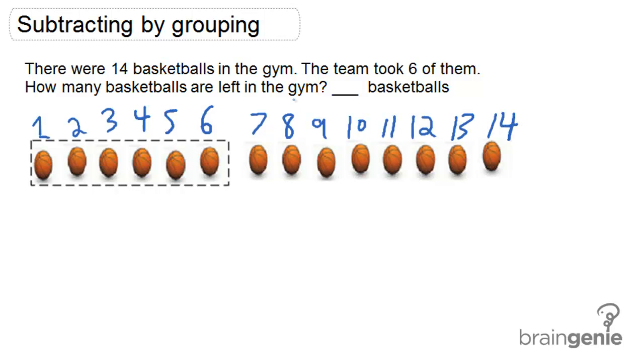Okay, so then it says the team took 6 of them. So we can think of that 6 as 14 minus 6, because the team took 6 away from the 14 basketballs that there were to start. So this group is the group of 6 basketballs that were taken away.